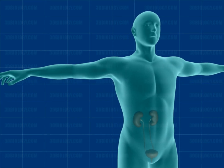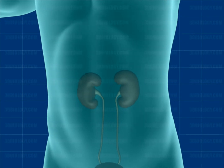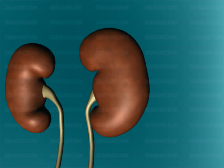The kidneys are bean-shaped, dark red, somewhat flattened, and located under the diaphragm near the back wall of the abdominal cavity. Each kidney weighs about 150 grams and is 10 centimeters long. The left kidney is slightly higher than the right kidney.